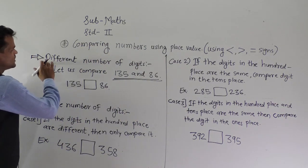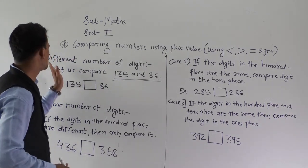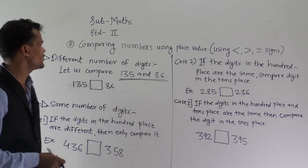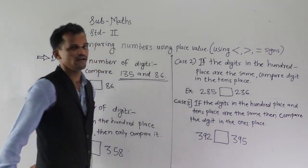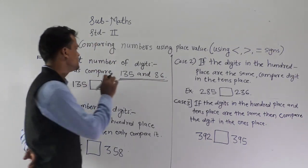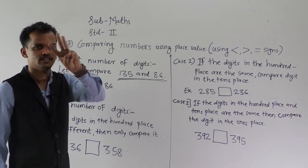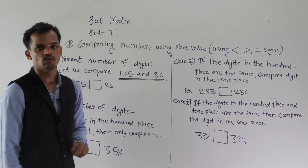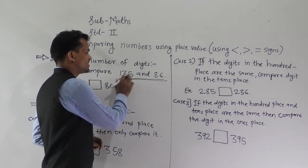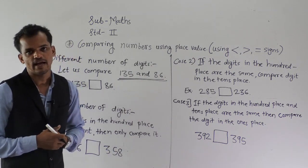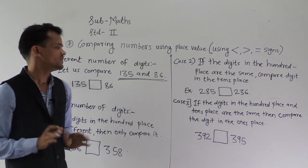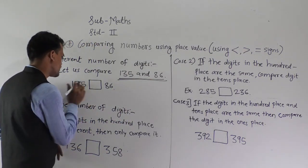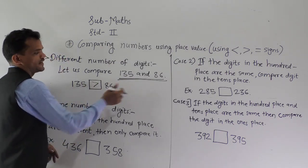The first case is different number of digits. Let us compare 135 and 86. We can observe that 135 is a 3-digit number and 86 is a 2-digit number. A 3-digit number is always greater than a 2-digit number. So, 135 is greater than 86.